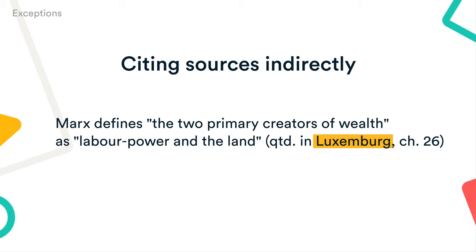Sometimes you might want to cite something that you found quoted in a secondary source. If possible, always seek out the original source and cite it directly. If you can't access the original source, make sure to name both the original author and the author of the source you accessed. Use the abbreviation qtd. in, which is short for 'quoted in,' to indicate where you found the quotation.